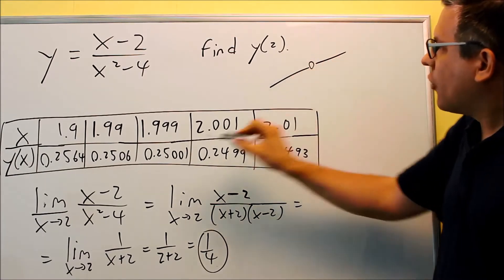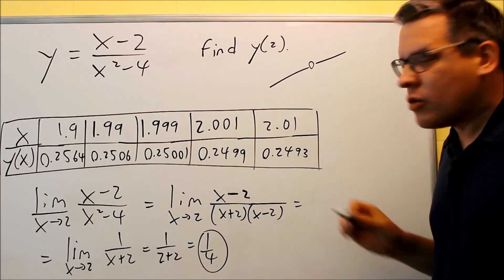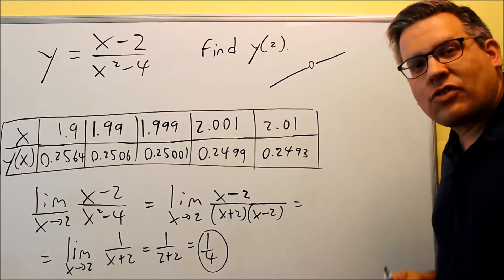So again, 2 itself we can't put in here because it's undefined. However, we can see what value it's going to come close to on both sides from the left and from the right.